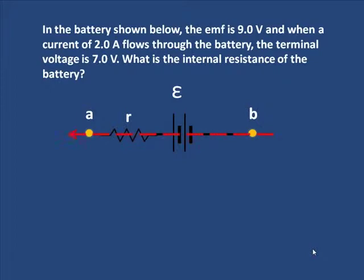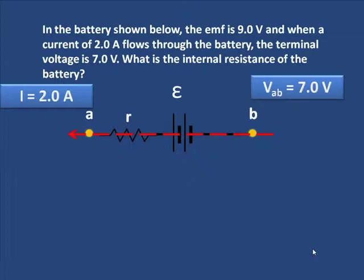I have a current that goes through, and that's 2 amps. I'll make a note of that. When that current of 2 amps goes through, there's a terminal voltage of 7. And now they want the internal resistance.